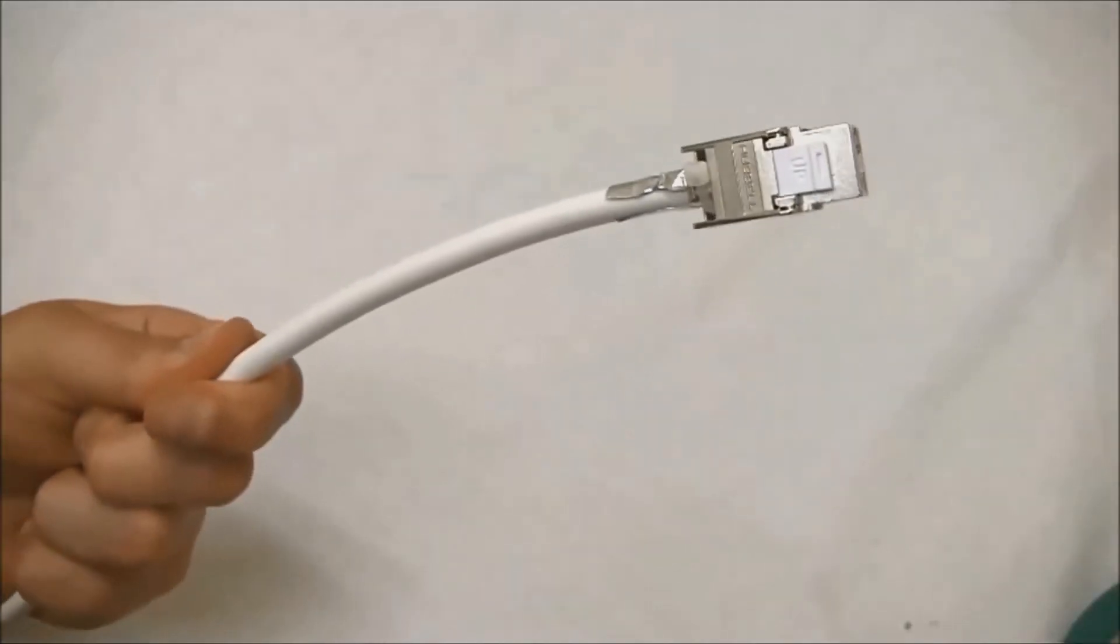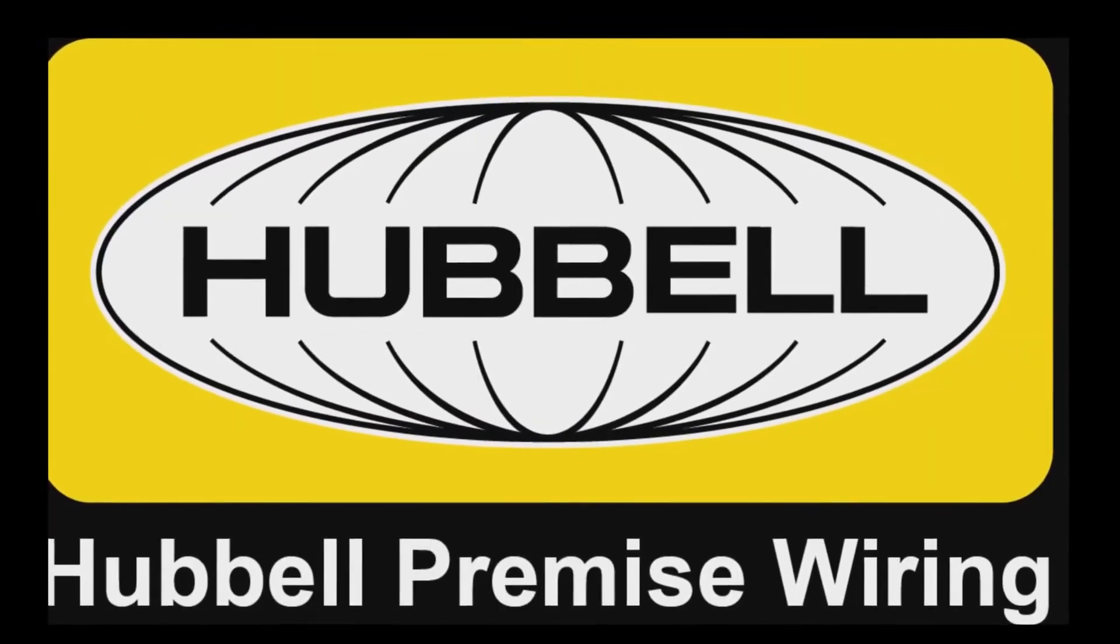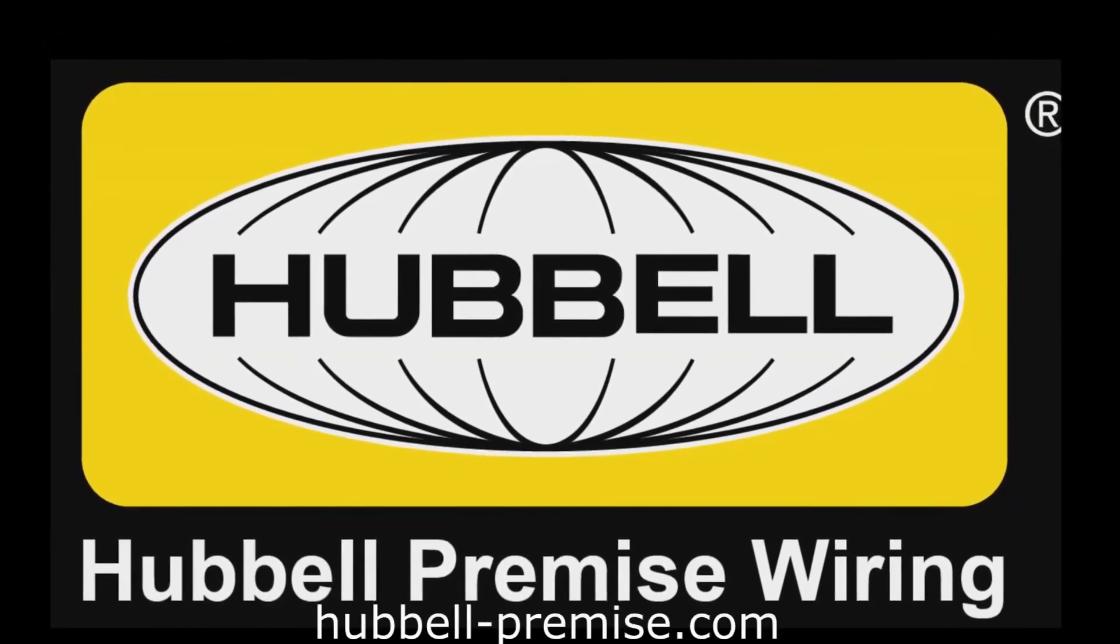And that completes the termination of Hubble's Category 6 and 6A shielded jack. For more information on this product, as well as Hubble's complete line of network infrastructure solutions, visit hubble-premise.com.